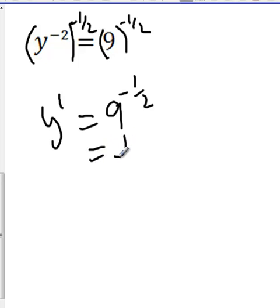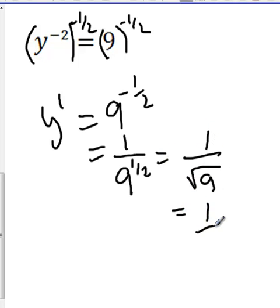So you get y equals 9 to the negative 1 half. And if you remember, your negative exponent is the same as 1 over 9 to the 1 half, which is 1 over the square root of 9, which equals 1 third.